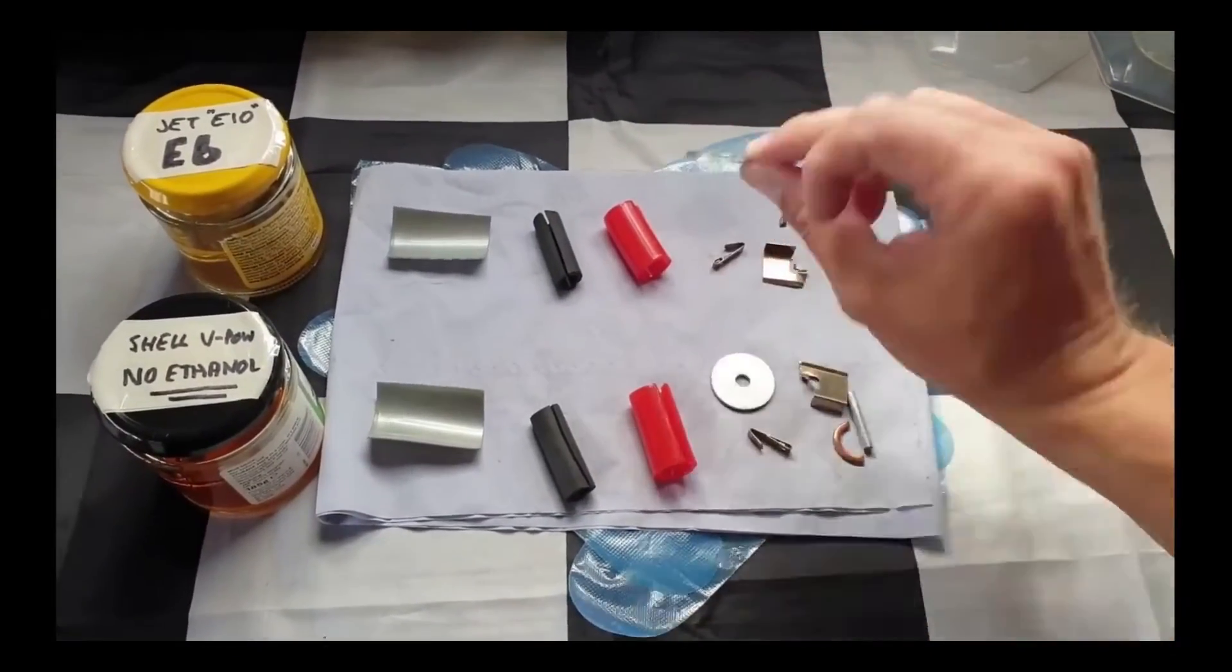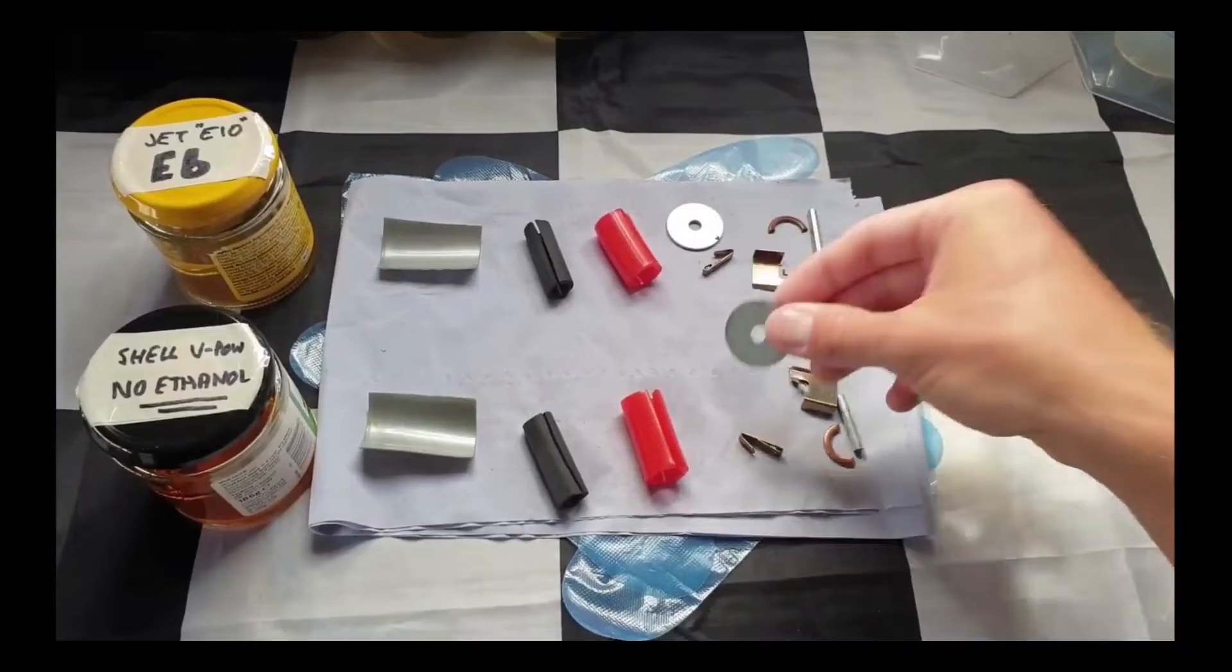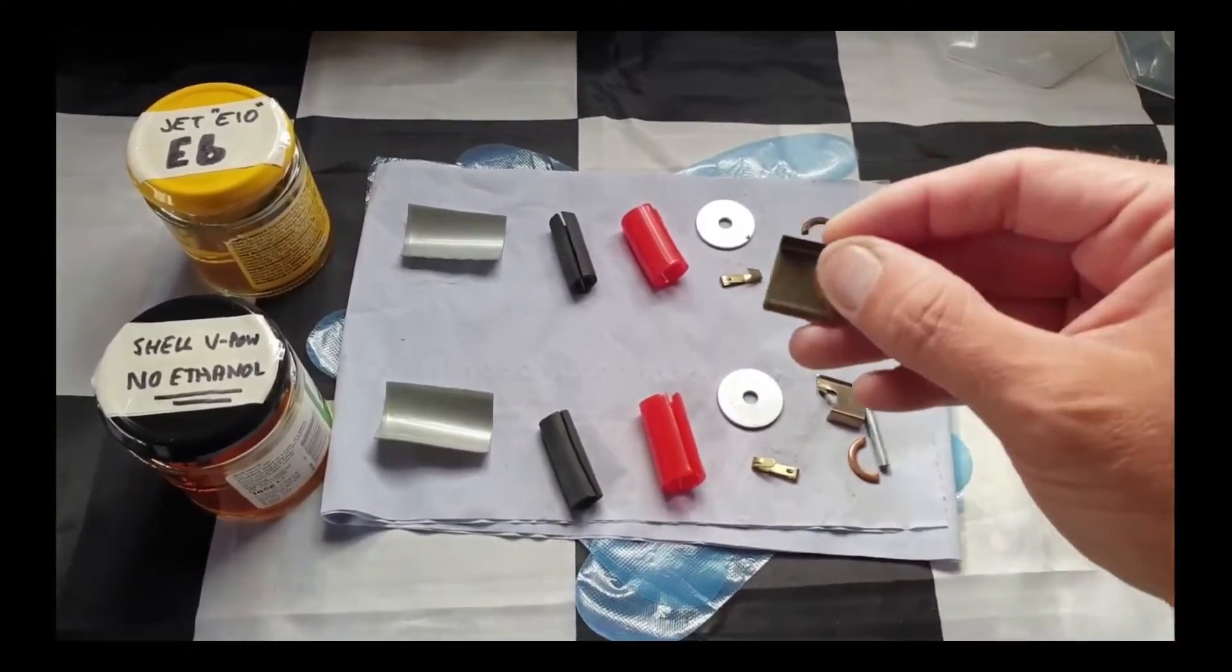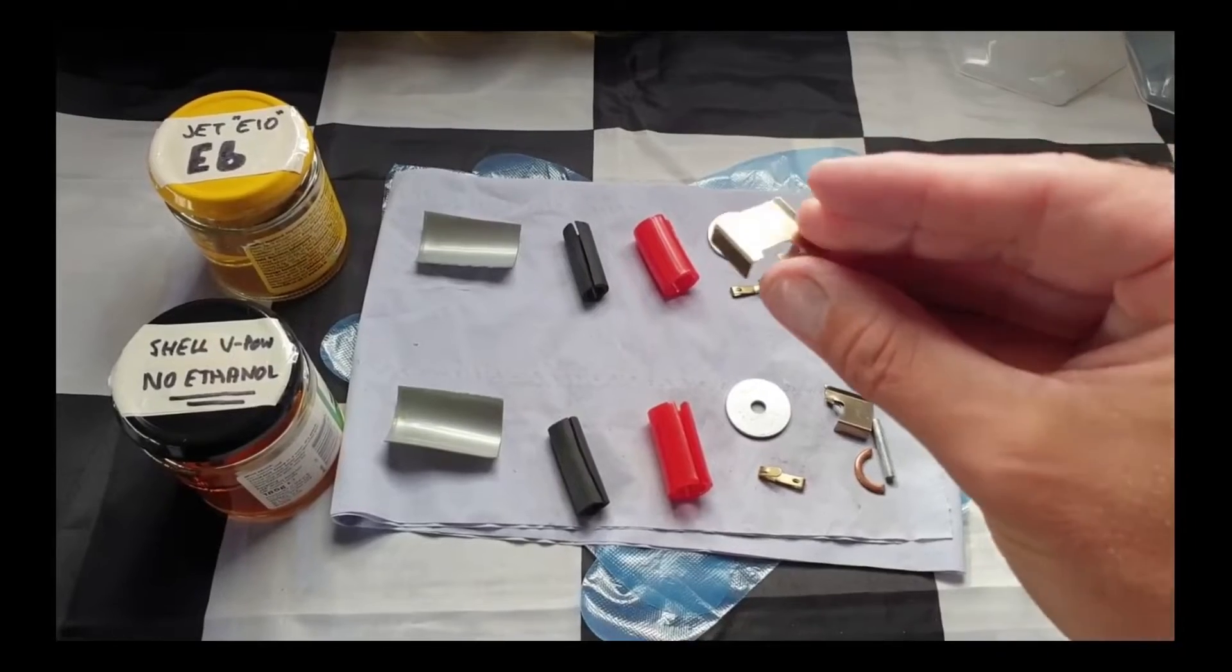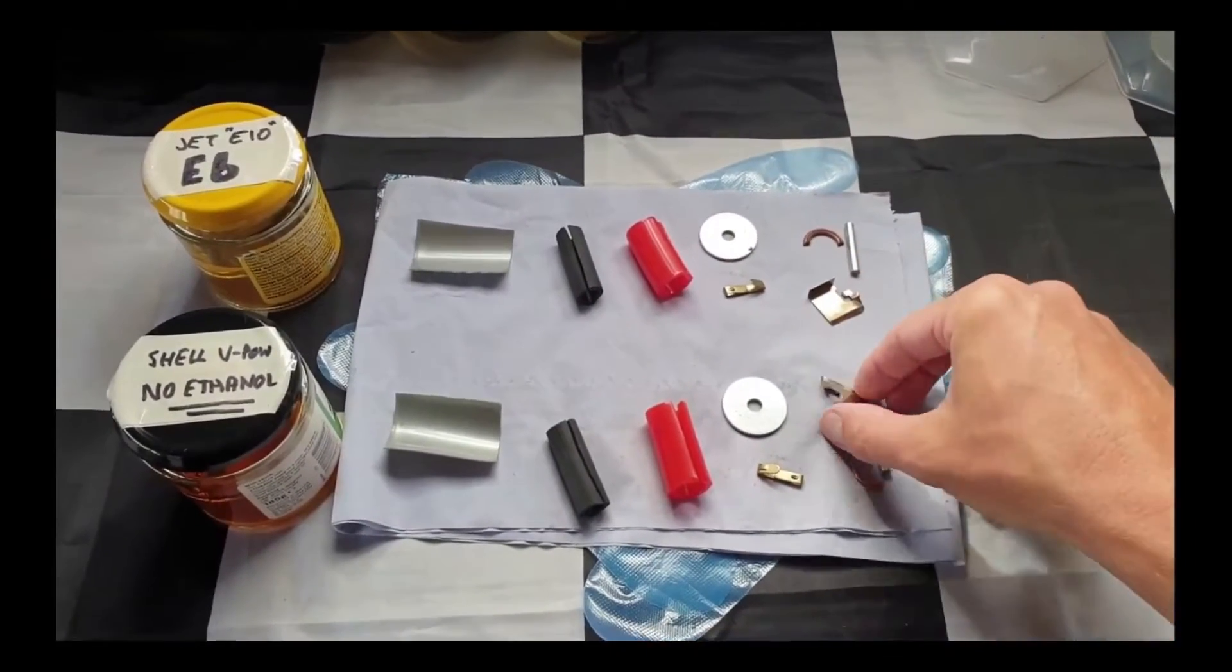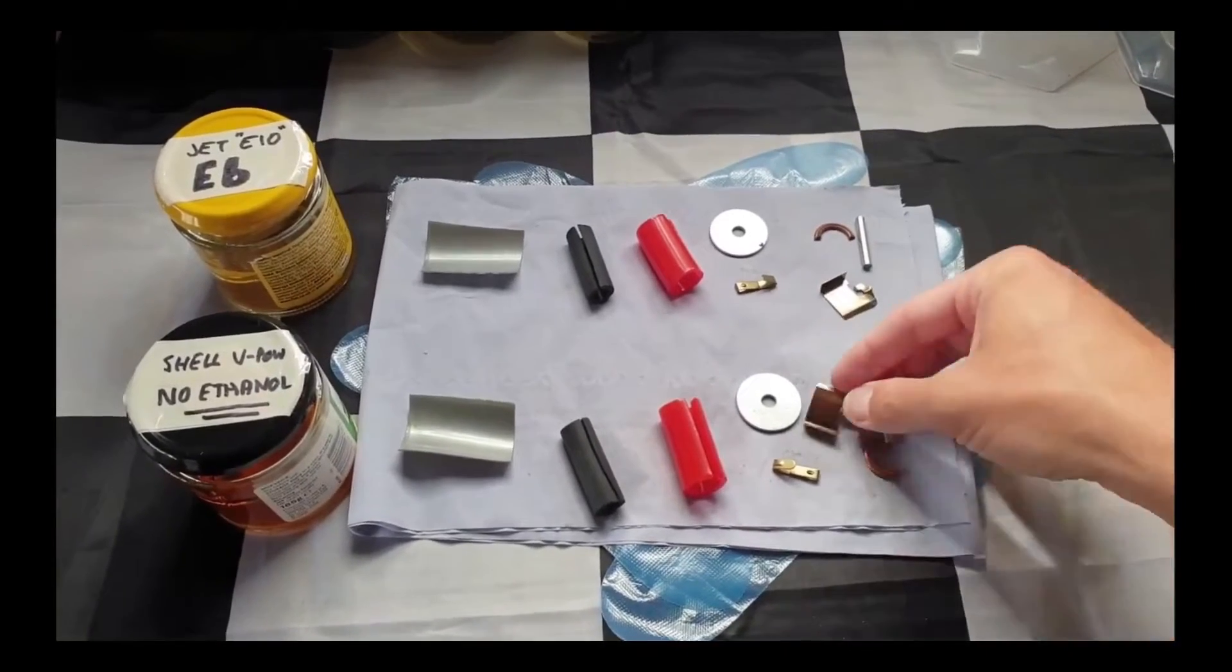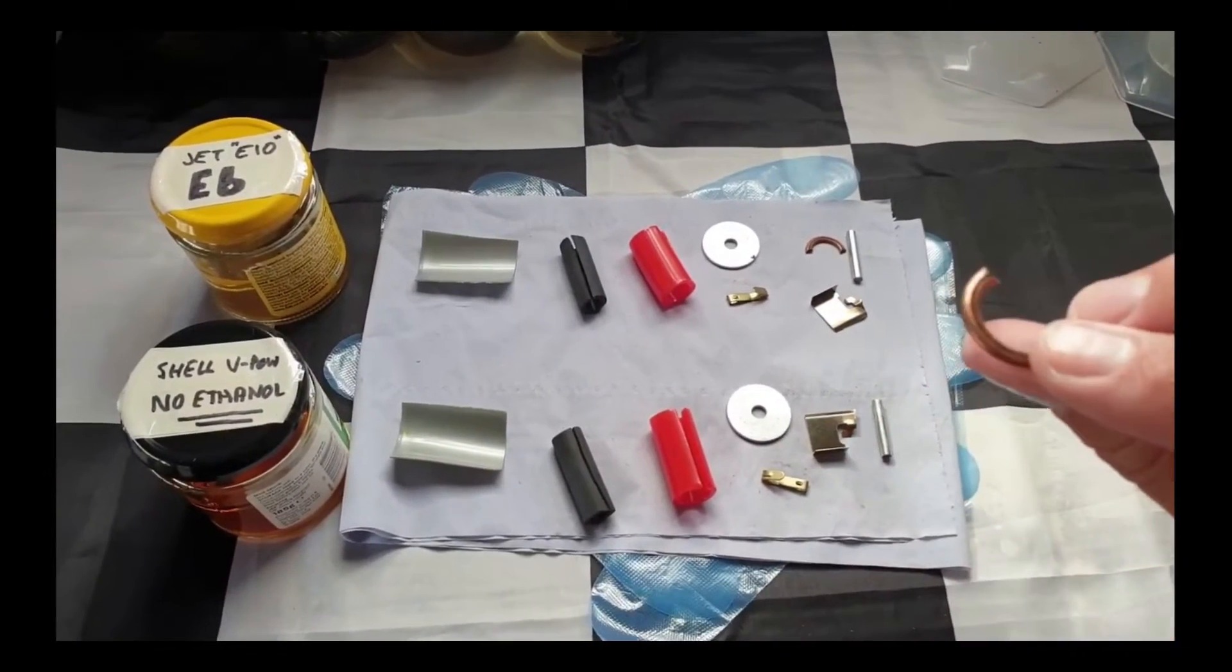The metal components are mostly unchanged. The zinc plate is fine. The brass hooks maybe have a slightest change in color as we also see with the stainless steel. It has a very slight tint but I'd say it's a little inconclusive.